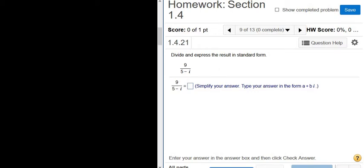Divide and express the result in standard form. We have 9 over 5 minus i. The first thing you have to do in these division problems is you have to multiply by the conjugate.